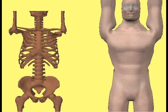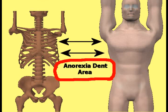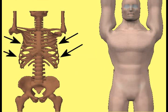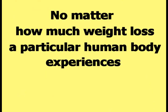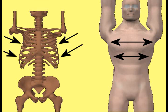As seen in this comparison picture between the computer model human body and a computer model human skeleton, the area above where anorexia dent appears is where the ribcage is located. The bones of the ribcage prevent the flesh and muscle covering them from shrinking in towards the spine by any appreciable amount. No matter how much weight loss a body experiences, the bones of the ribcage will keep that area of the torso close to a constant width.